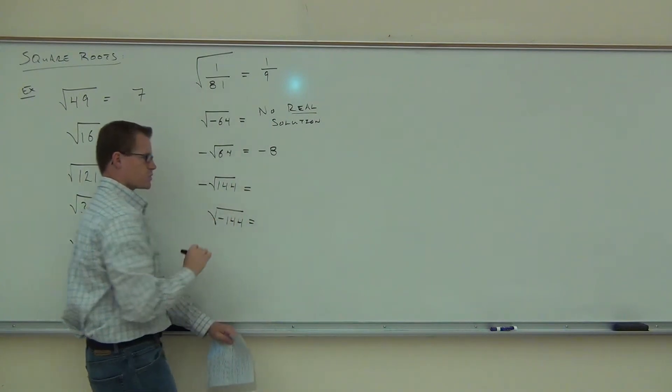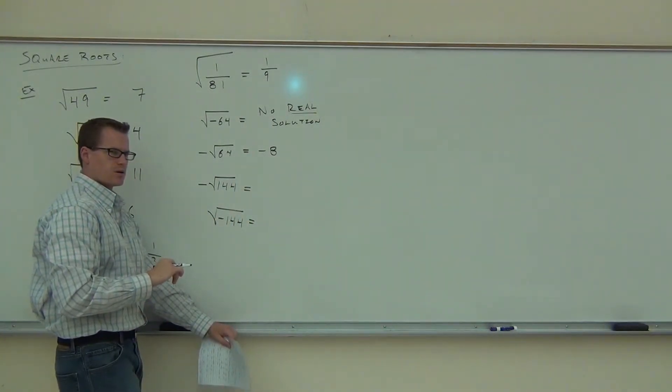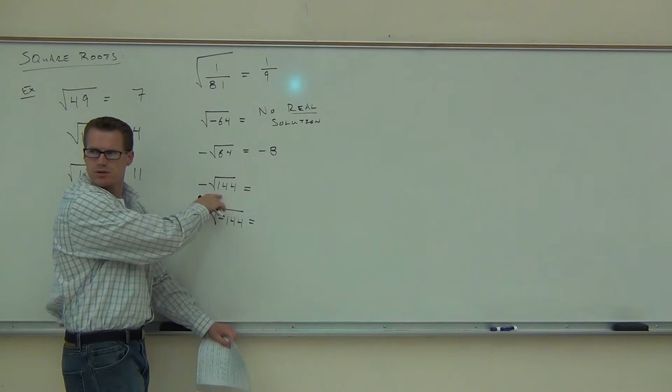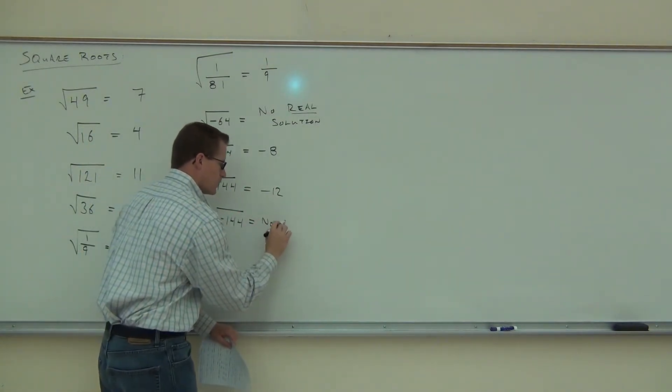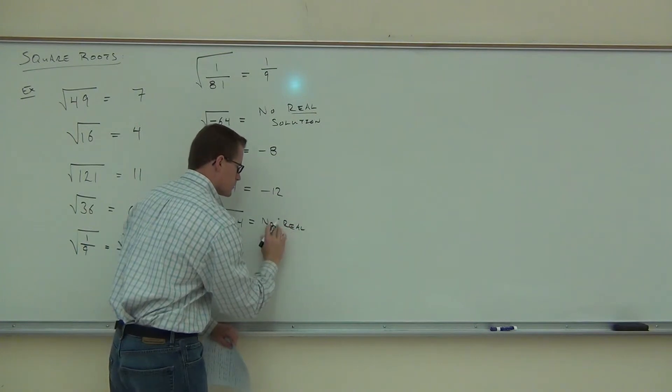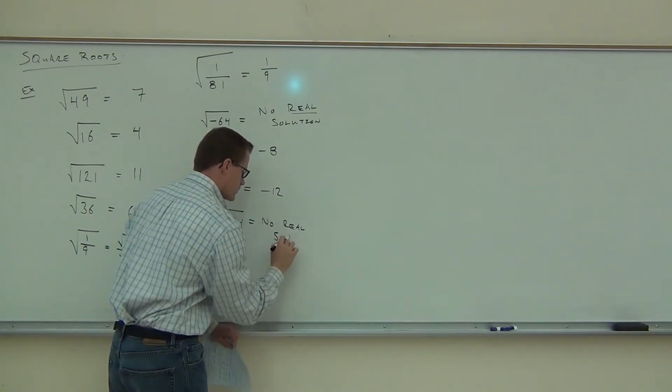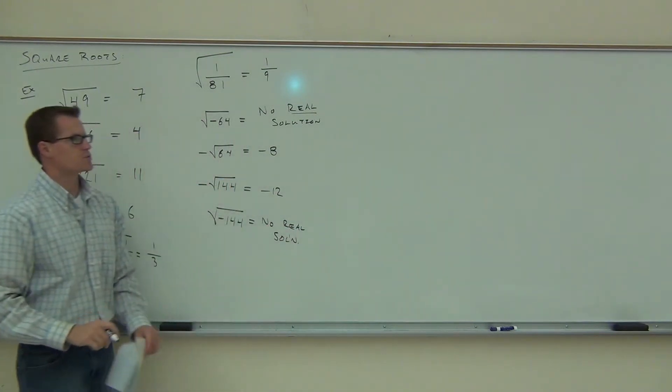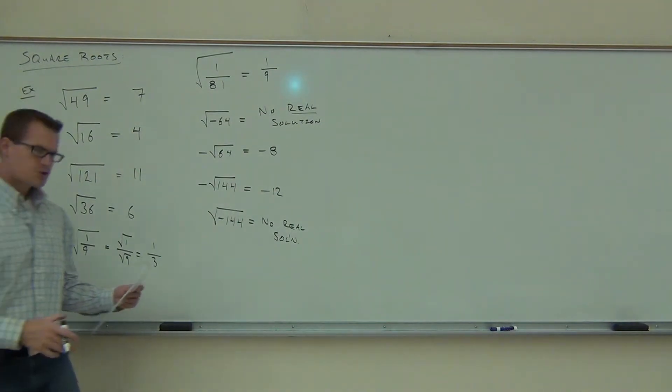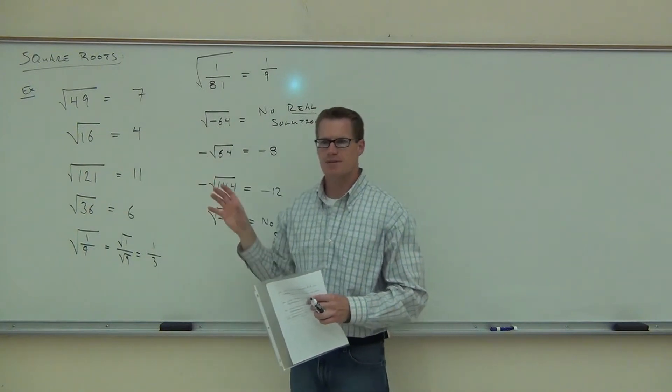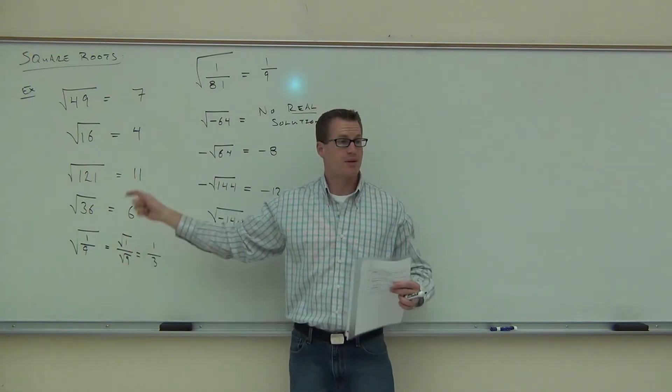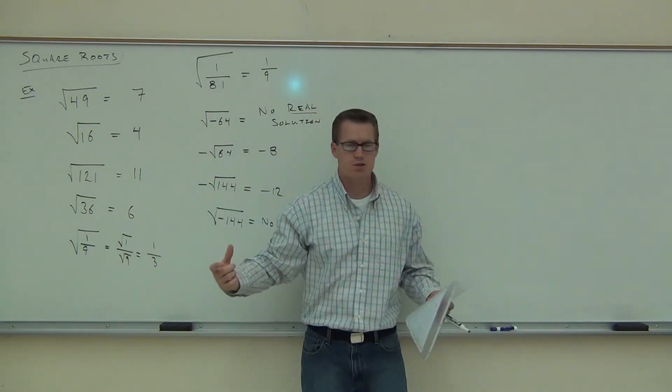Again, which one is possible here? The top one or the bottom one? The top one. The top one will be how much? Negative 12. Good. And the bottom one, again, we say no real solution. Would you raise your hand if you feel okay talking about these square roots? Good. So we can take square roots. We know that if the negatives are outside the square root, that's okay. But if they're inside the square root, that's not okay. That's no real solution.